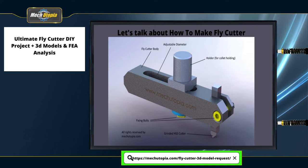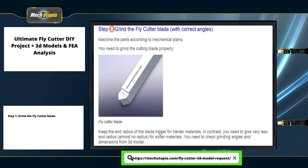If you have a CNC machine, you can download our 3D Parasolid file to create CNC programs with your CAM system. There are also 2D mechanical blueprints available for those who prefer to machine manually using a milling machine and centre lathe. These files are detailed and self-explanatory. Step 1: grind the fly cutter blade.